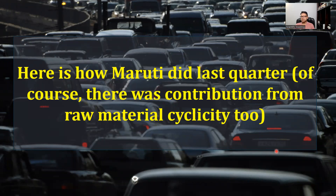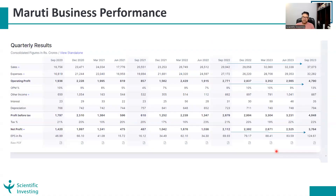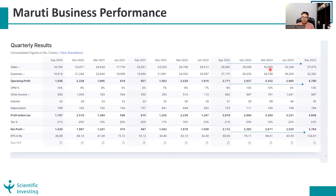Here is how Maruti did in the last quarter. There was some contribution from raw material cyclicity which came in favor, but Maruti was first able to grow its top line by 20 percent. By doing 8 percent volume growth, Maruti was able to grow its revenue by 20 percent — which is almost 2.5x growth in revenue relative to volume growth — because of the unit value lift going from 6 lakh to 6.42 lakh due to the bigger push in the SUV segment and revenue mix change.